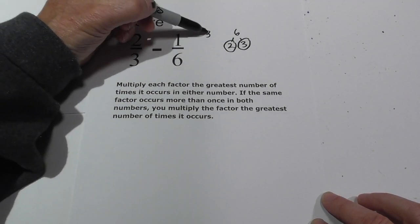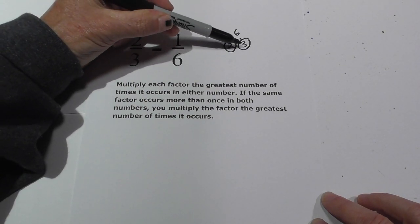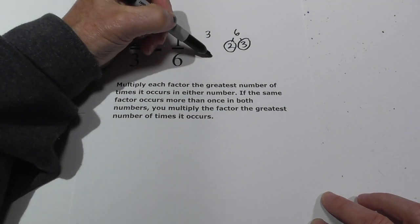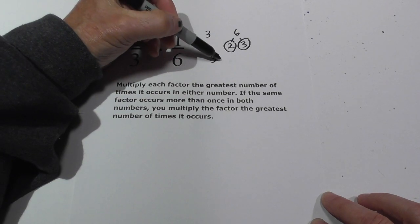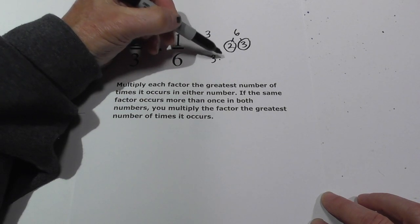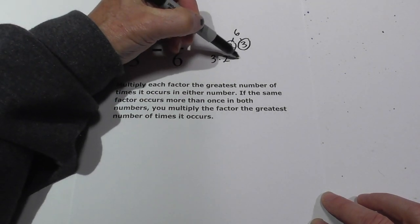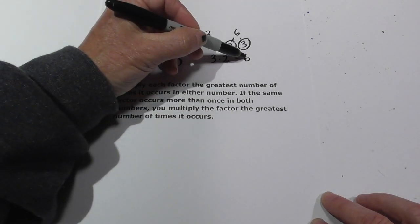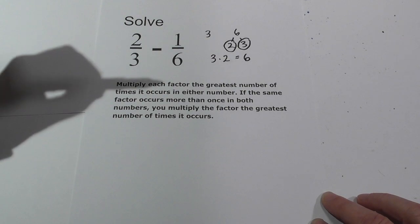So first we have the three. It occurs in both the three and the six, and it only occurs one time in both, so I'm going to multiply three one time. And then two only occurs one time, so it's three times two equals six. Our least common denominator is six.